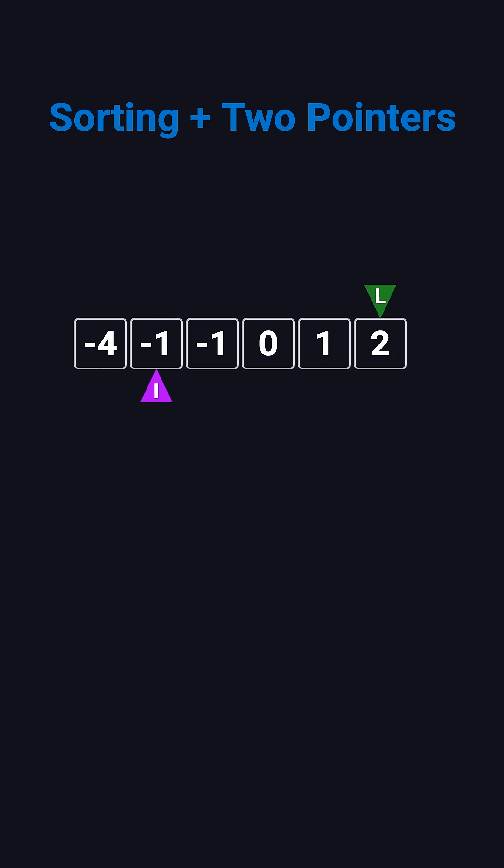Next, i moves to the first negative 1. Left is at the second negative 1, and right is at 2. The sum is 0, so we record the first result: negative 1, negative 1, 2. Then we move both pointers inward.